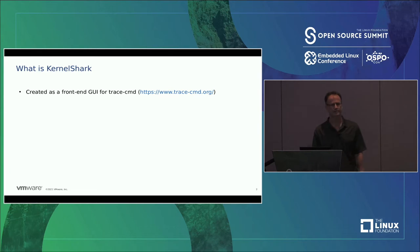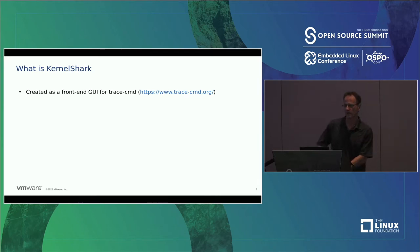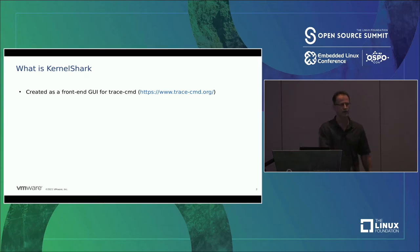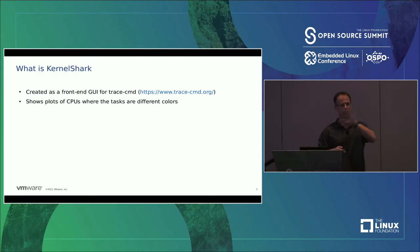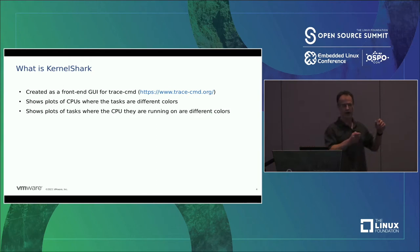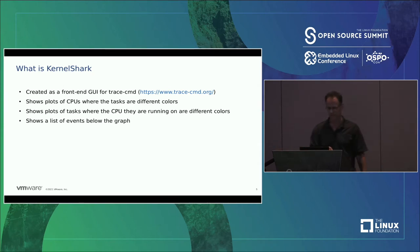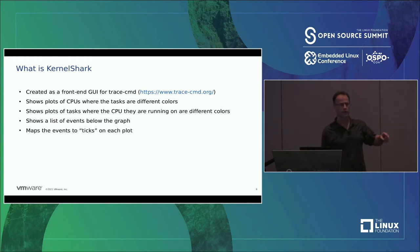So, what is KernelShark? Whether or not you guys know what it is — I'm expecting you probably do if you're coming to this talk about version 2 — I'll go on. It's a front-end GUI utility for trace-cmd, which is a front-end command line interface for Ftrace, a kernel tracer inside the Linux kernel. It shows plots of CPU events where each task is a different color, and plots of tasks where the color changes depending on what CPU the task is running on. Below the graph, it shows a list of events you can map to the ticks on the graph.